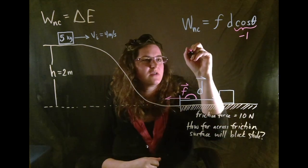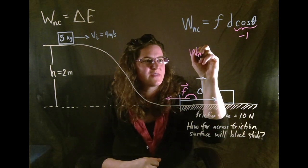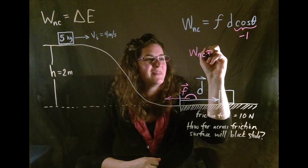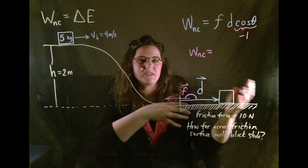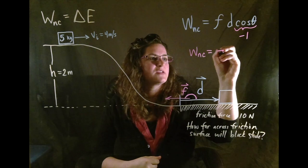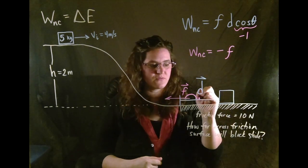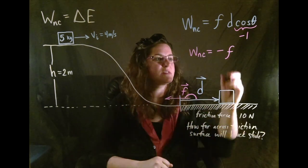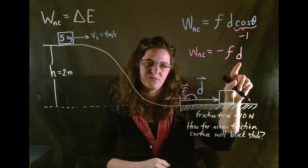So really the work done by the force, it makes sense that the work done by the non-conservative force is something that takes energy from the system. So we're going to have negative the friction force, which we're given, it's 10 newtons, times d, which is the thing that we're trying to solve for.